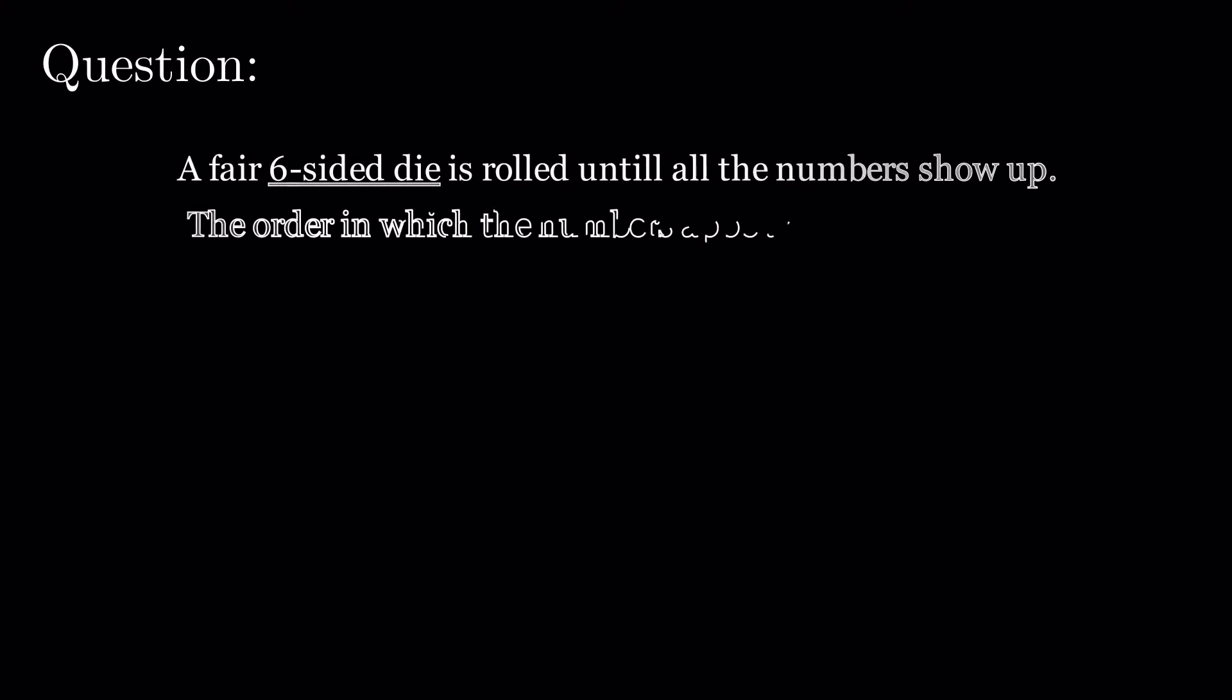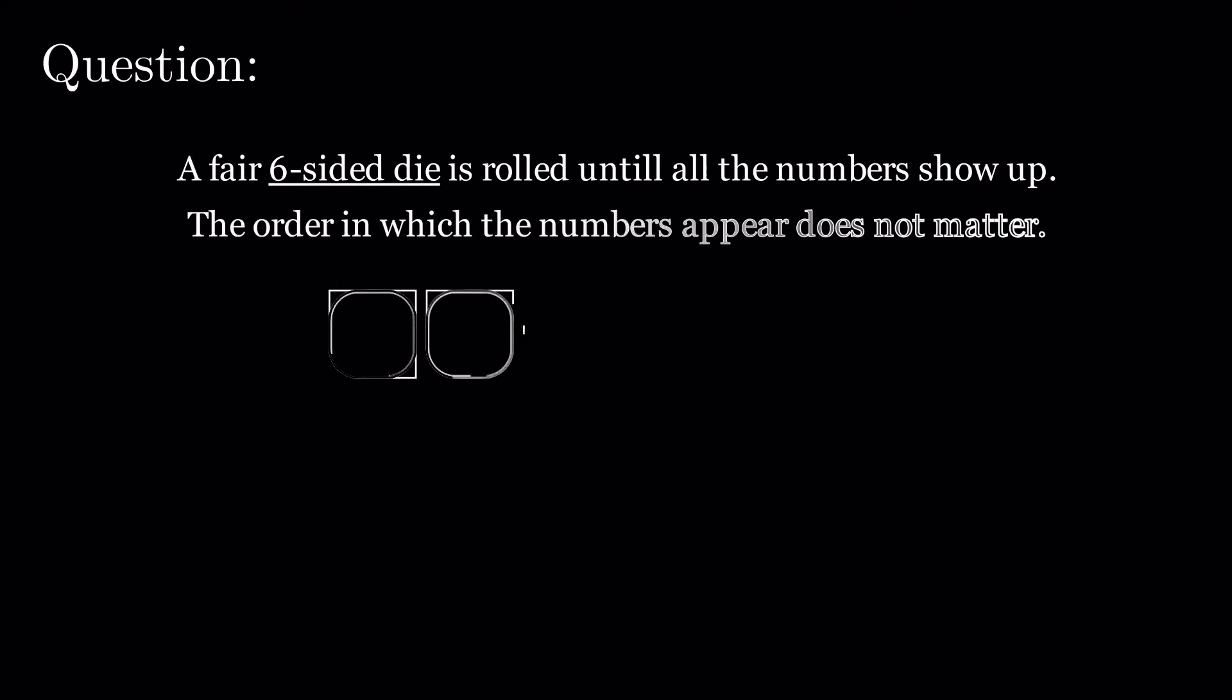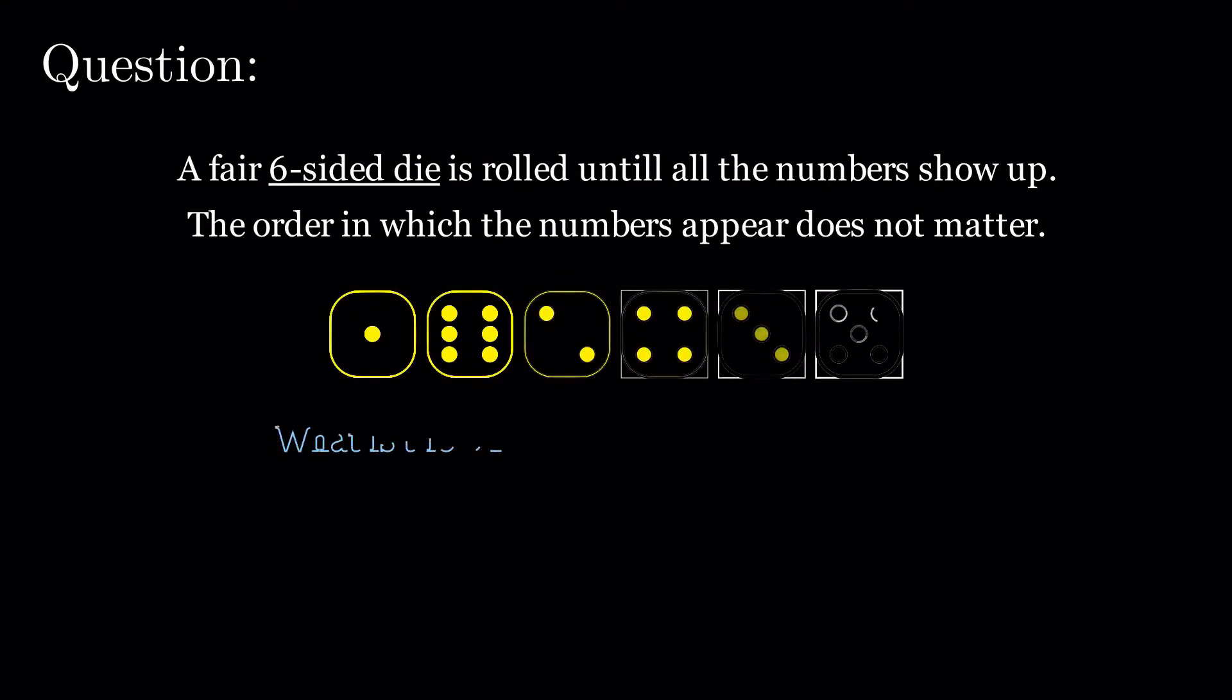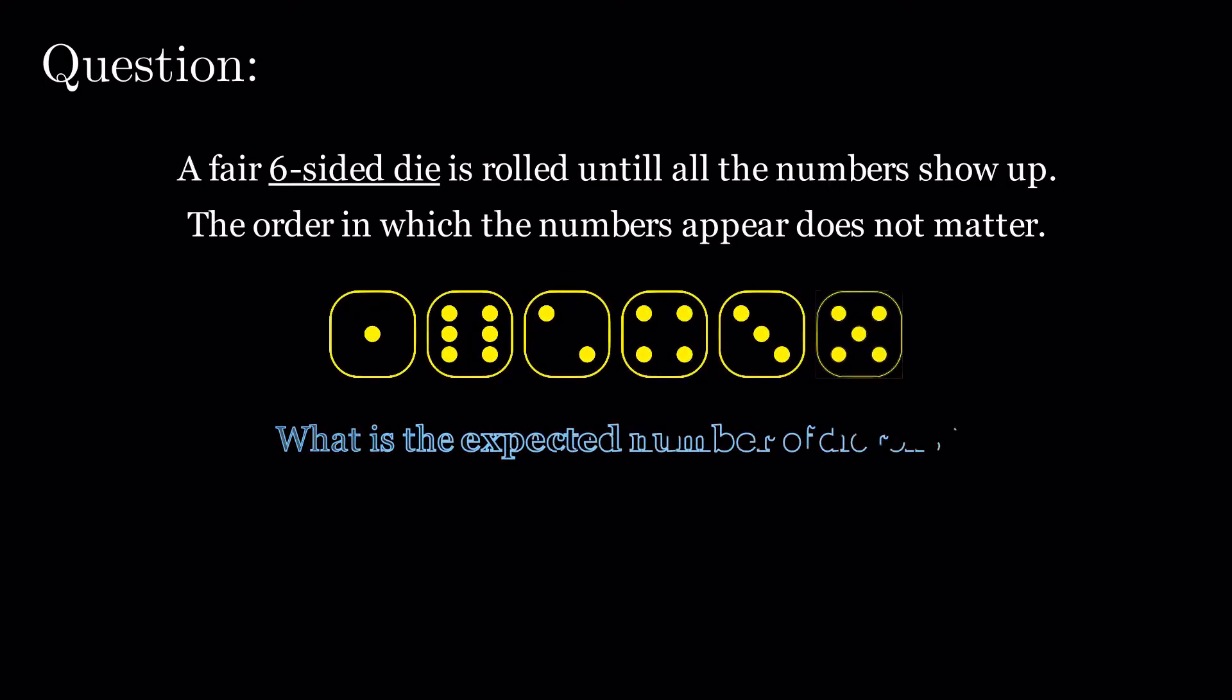A fair, six-sided die is rolled until all the numbers show up. The order in which the numbers appear does not matter. What is the expected number of die rolls?